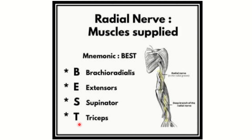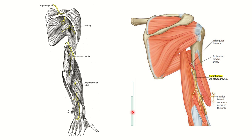So the mnemonic is BEST: brachioradialis, extensors of the upper limb, supinator, triceps. We can see the radial nerve here — it starts from above and runs very close to the shaft of the humerus, close to the bone. In the second picture, we can see the radial nerve supplying the arm muscles from this proximal position.